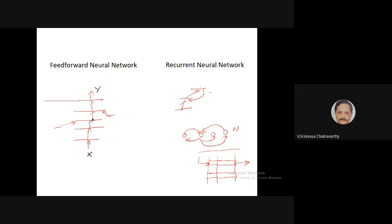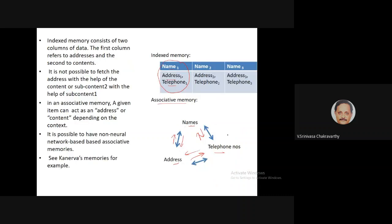Recurrent neural network is a very broad class — any network which has any loop inside can be called a recurrent neural network. But Hopfield network is a special kind: a very old one in which there are N neurons and each neuron is connected to every other neuron. If you have N neurons you have a matrix of N-squared connections — that is the Hopfield network.